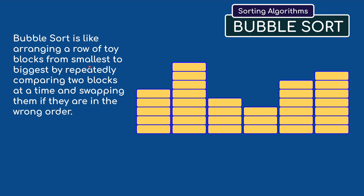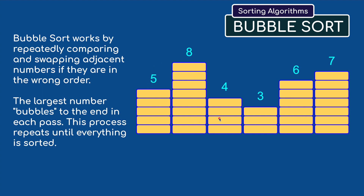So let's have a look at this. Here I've arranged several columns of toy blocks but at the moment they're in the wrong order and we need to swap them around to get them into the correct order. I've numbered the blocks so we can see how many are in each column. The largest number bubbles to the end of each pass, and this process repeats until everything is sorted.